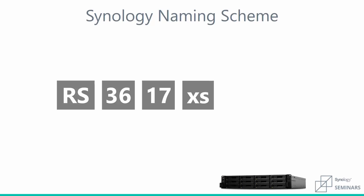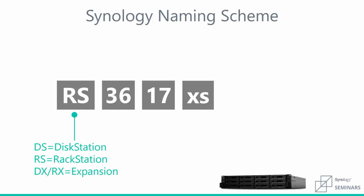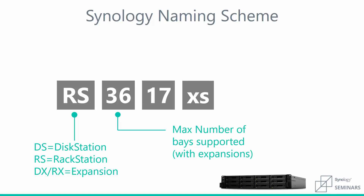So let's break it down. At the beginning of any of our product names is going to be the form factor — either RS or DS. DS stands for disk station, a more desktop form factor. RS stands for rack station, a unit meant to be mounted in a rack solution. We also have DX and RX for our expansion units. To the right of the form factor will be the max number of bays supported with expansion units. For example, we have a 12-bay head unit with the RS-36, but just based on the name alone you can see that this unit can have two 12-bay expansions attached, giving you a total of 36 drive bays. To the right of the max number of drive bays supported will be the year in which the unit was released — in this case the RS-3617, therefore you know it is a 2017 unit.